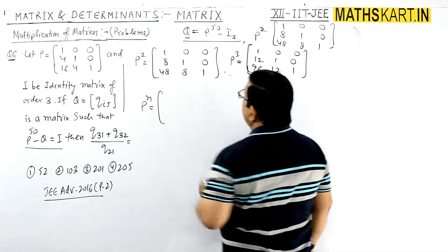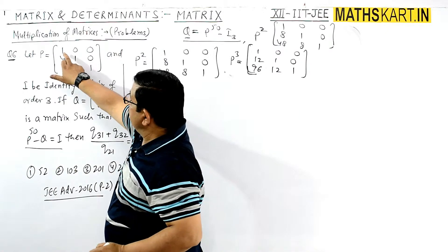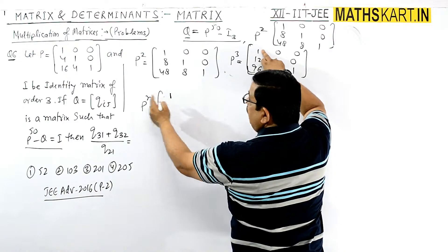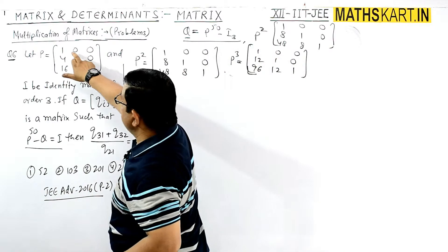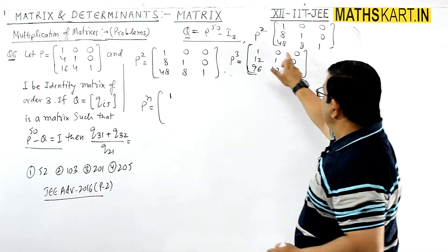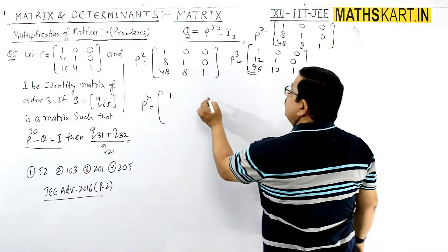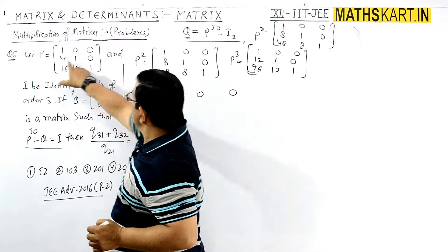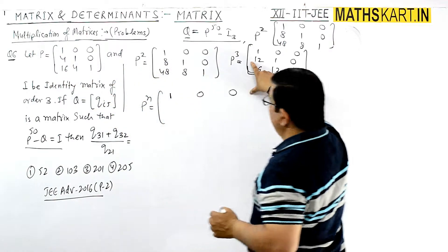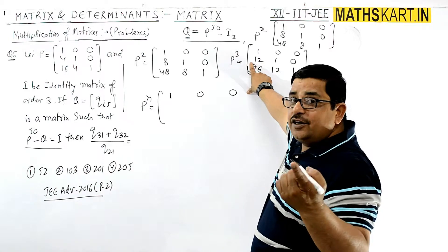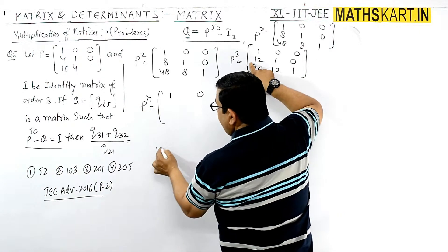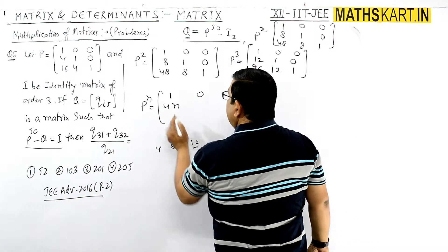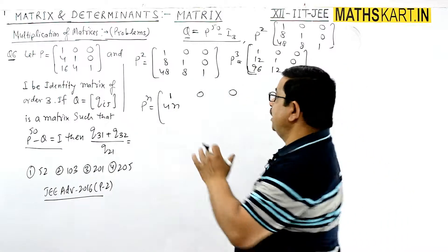Looking at the (3,1) position: the sequence is 16, 48, 96. This is neither AP nor GP. So we have to use the method of difference. The first term is 16, second is 48, third is 96. Taking differences: 48 minus 16 equals 32, 96 minus 48 equals 48. The second differences are 32, 48 which increase by 16 each time - so these are in AP.